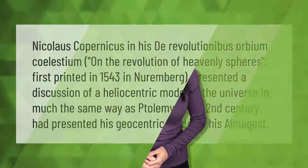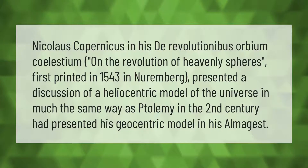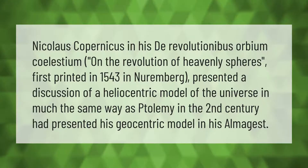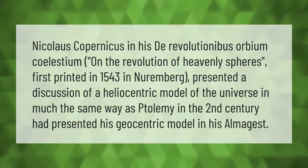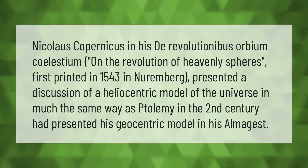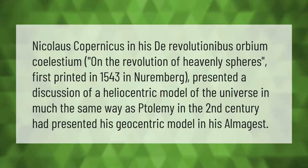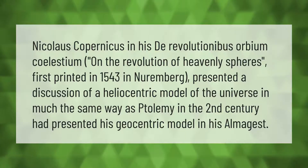Nicolaus Copernicus, in his De Revolutionibus Orbium Coelestium — On the Revolution of Heavenly Spheres — first printed in 1543 in Nuremberg, presented a discussion of a heliocentric model of the universe, in much the same way as Ptolemy in the second century had presented his geocentric model in his Almagest.